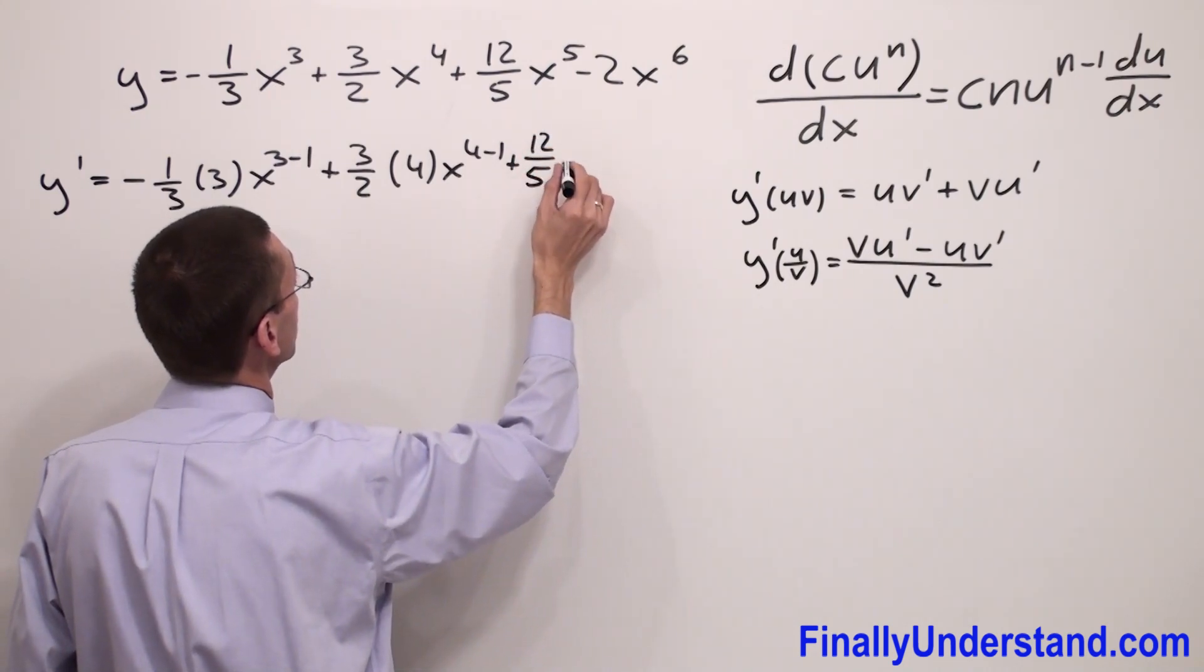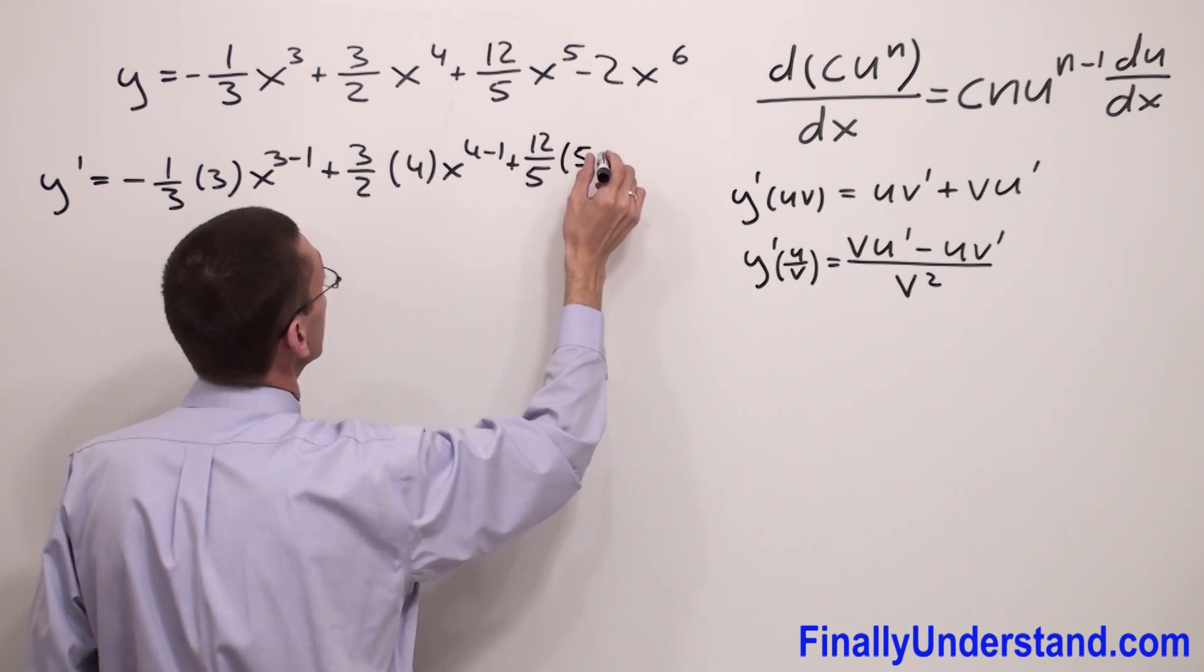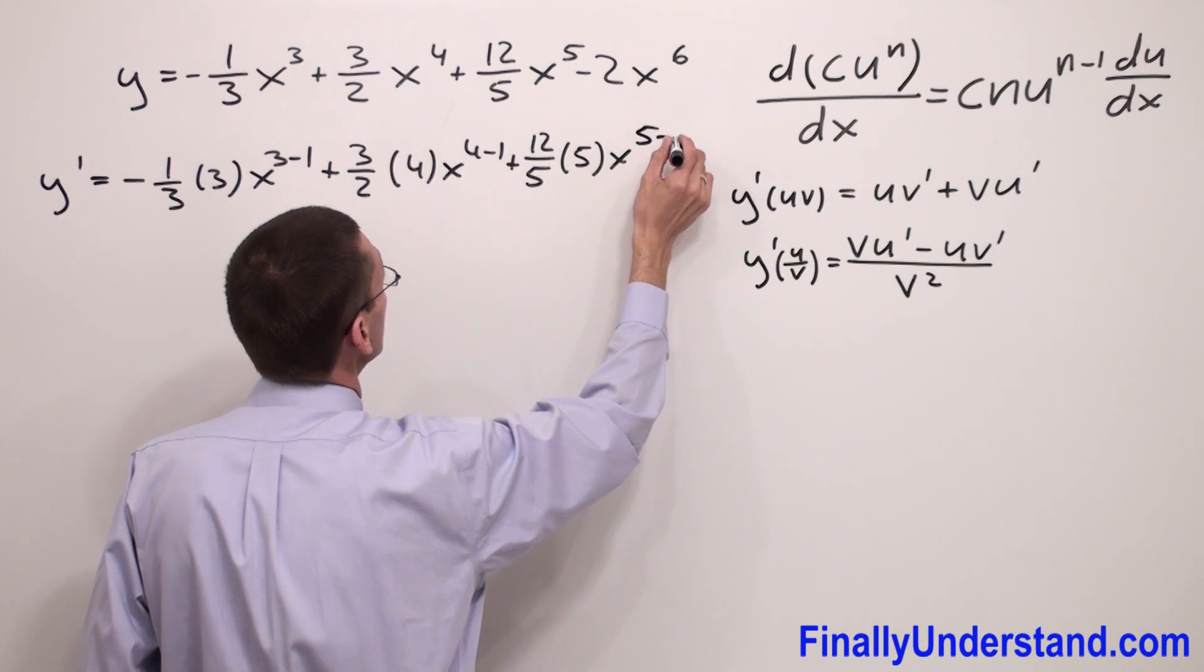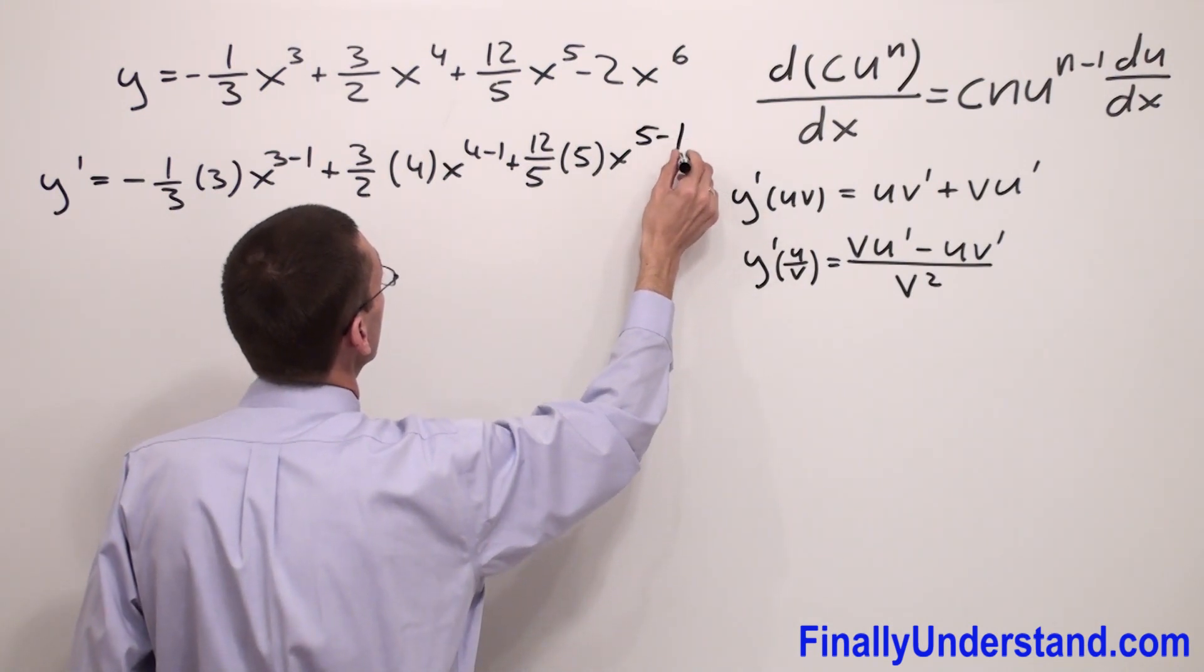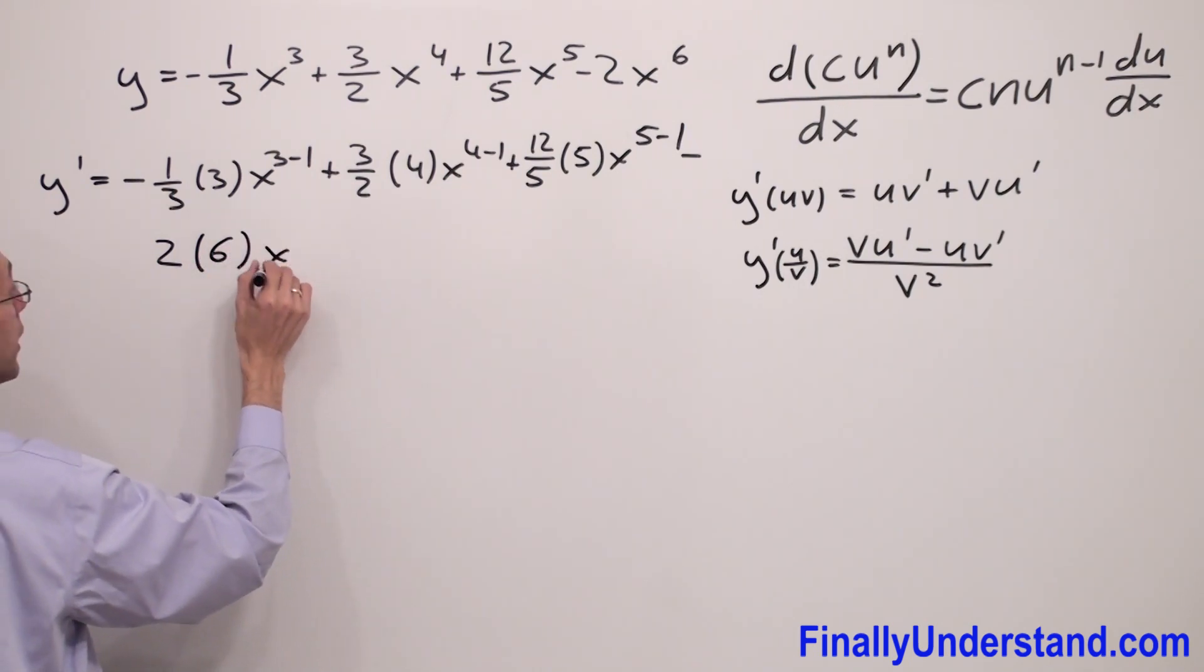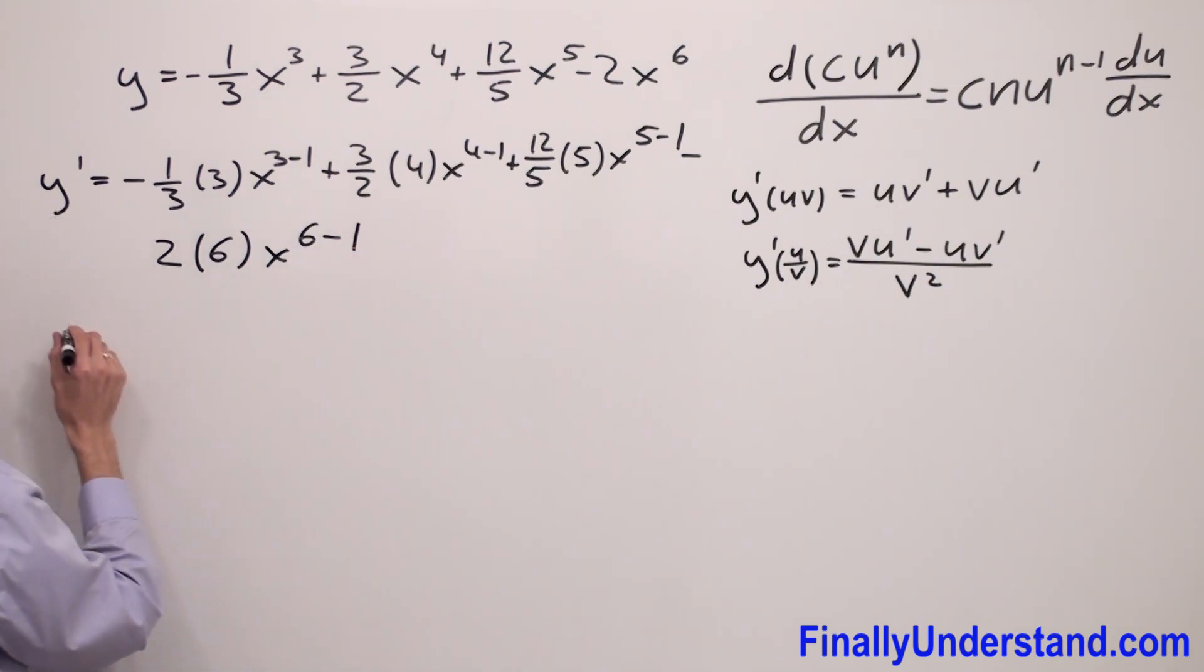...to the exponent 5, x to the 5 minus 1, minus the constant which is 2 times the exponent, x to the 6 minus 1. So I have y prime equals...